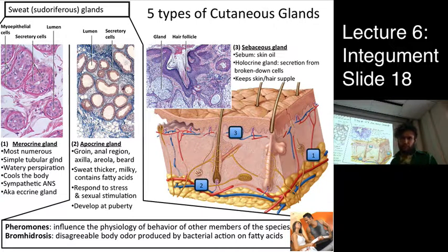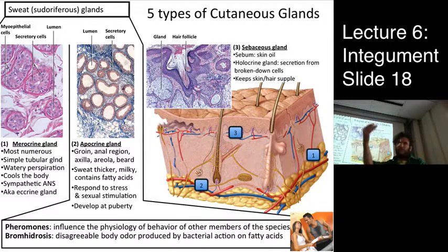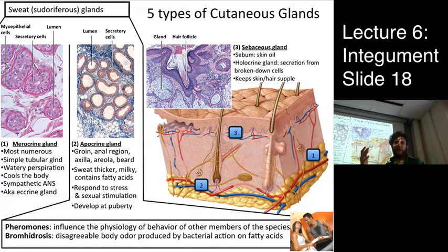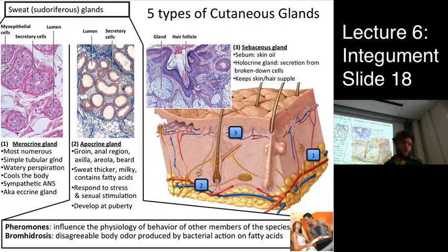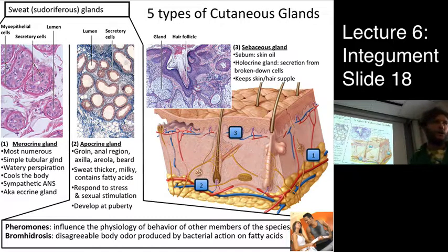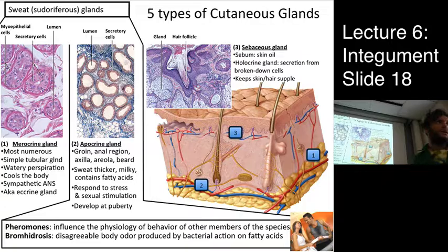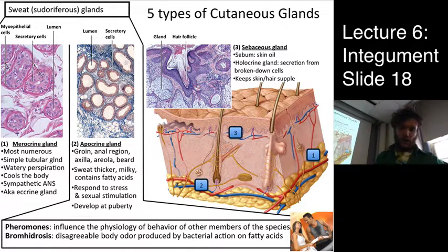The sweat from apocrine glands is thicker and milkier, with a range of fatty acids. These glands don't activate until puberty and are triggered by stress or sexual arousal. One content in apocrine sweat is pheromones — chemical signals that influence the physiological behavior of other members of the species. This is how we send chemical signals between one another.